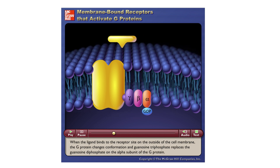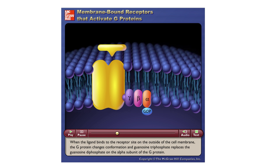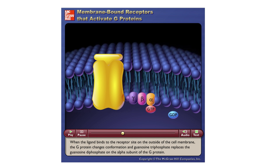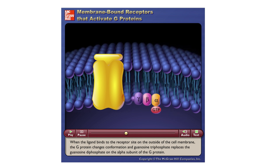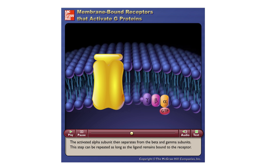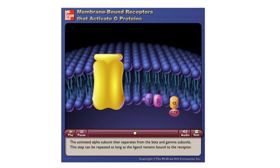When the ligand binds to the receptor site on the outside of the cell membrane, the G protein changes confirmation and guanosine triphosphate replaces the guanosine diphosphate on the alpha subunit of the G protein. The activated alpha subunit then separates from the beta and gamma subunits.